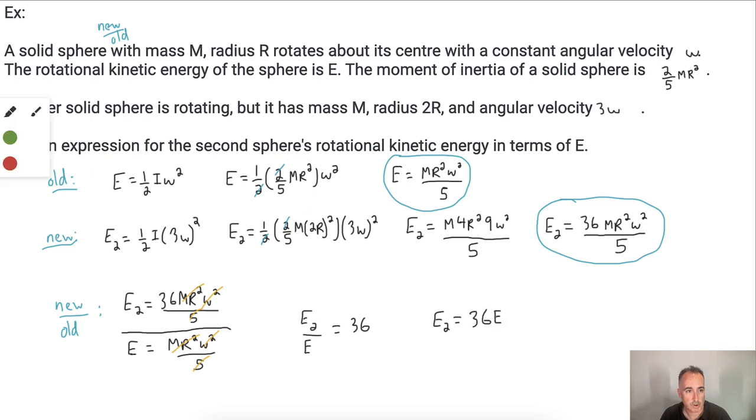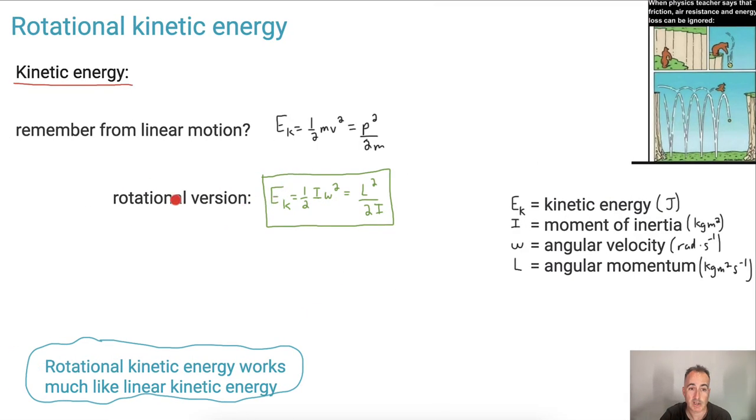Now, this could have been like a multiple choice question or something like that, but this is actually how you could deal with something like this. So whenever I see a ratio kind of question, I always just find an equation for old, an equation for new, and I do new over old. And you notice what we did before? We just learned that the rotational version of kinetic energy is very similar to the linear version. We just have to transpose the different variables. Hooray!